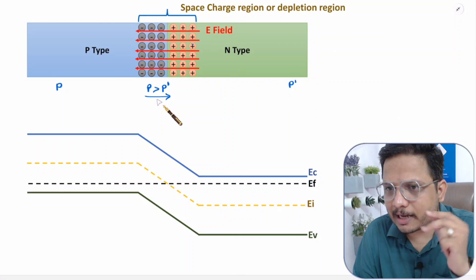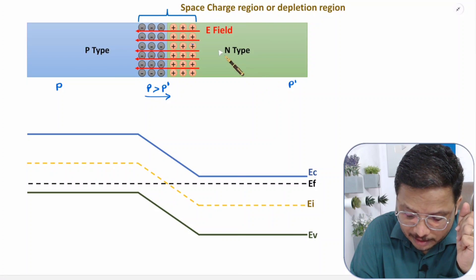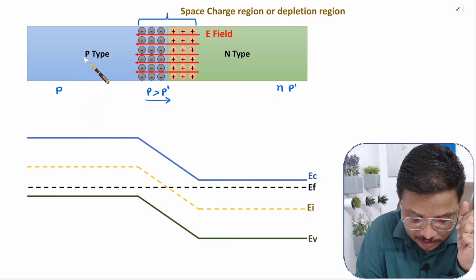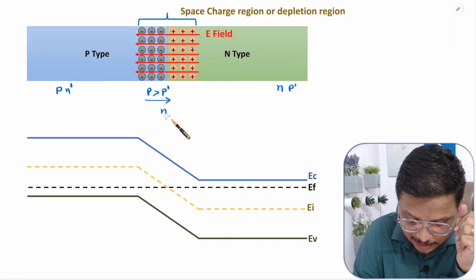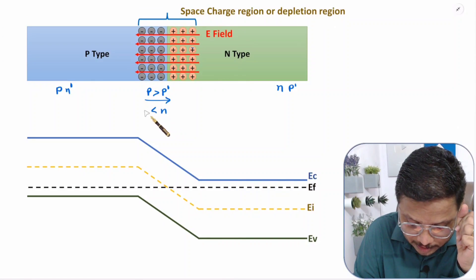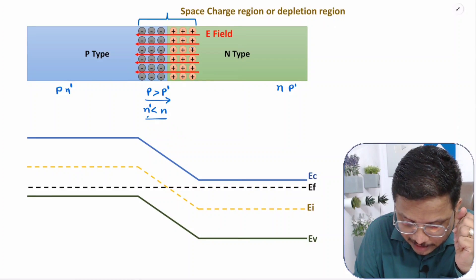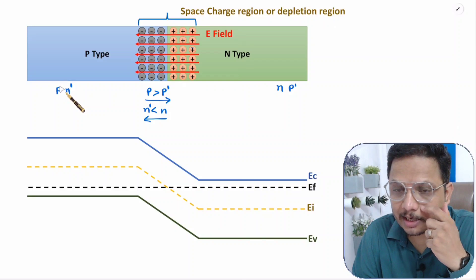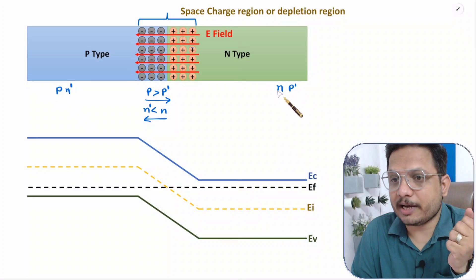Holes direction will be direction of current. N-type is having electron concentration N, and with P-type electron concentration is N dash. So obviously concentration of N is way greater compared to N dash. Electrons will be flowing in this direction as per concentration gradient. That is referred as diffusion current, which is happening because of concentration gradient.